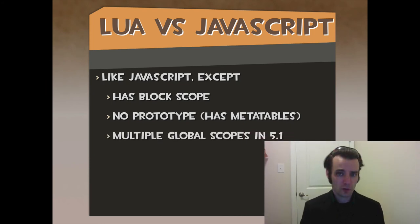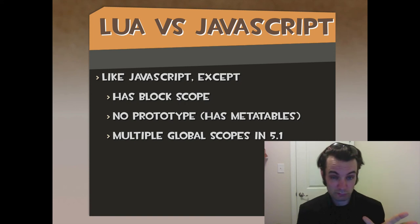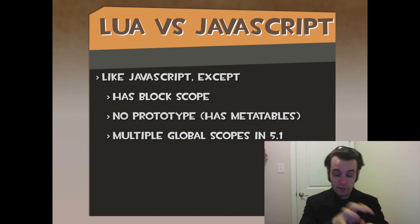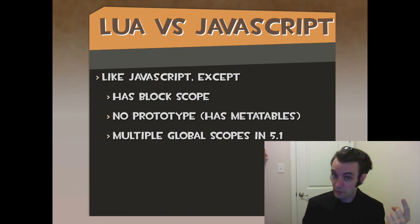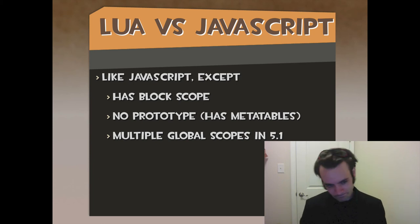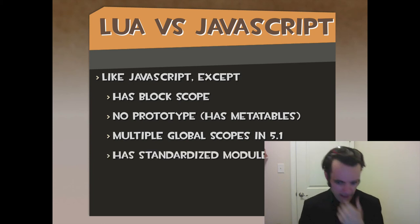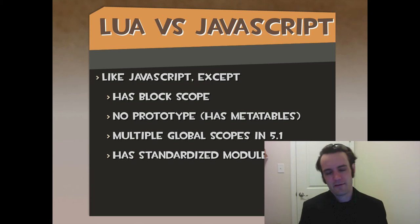Lua also has multiple global scopes in 5.1. JavaScript has a single window — unless you're running from another domain, but for the most part it's a single window. Lua has multiple globals. It starts with underscore G, capital G. In 5.1, you can have multiples. In 5.2, they've kind of not really standardized modules — they said they have, but they haven't, because everyone still does it differently.